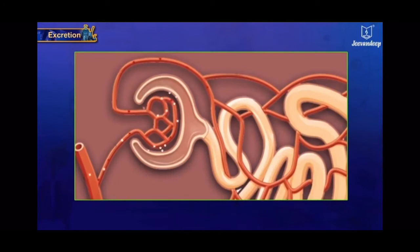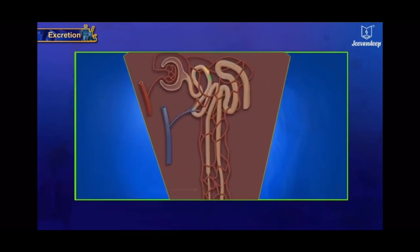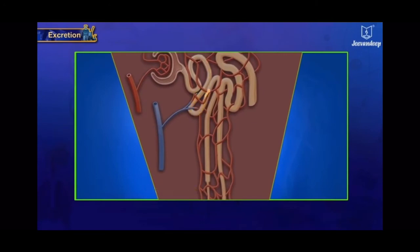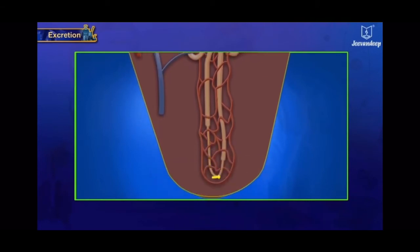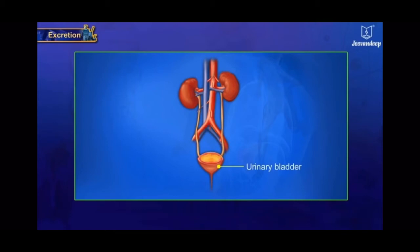From Bowman's capsule, the glomerular filtrate passes further through the nephron tubule, where reabsorption of water and other useful substances takes place. The resultant concentrated filtrate containing the waste matter forms the urine. The urine thus formed eventually enters the ureters and ultimately reaches the urinary bladder, where it is stored for some time and periodically expelled through the urethra.